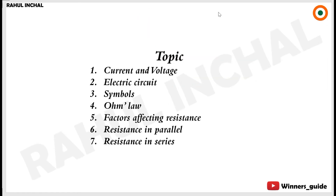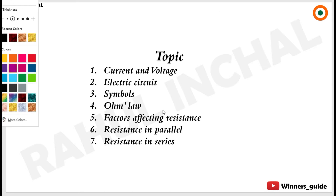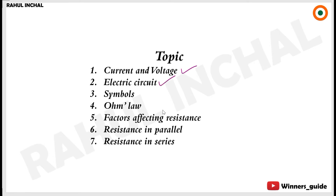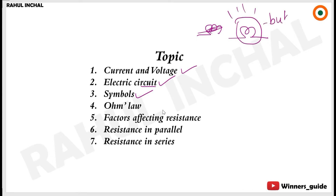What we are going to learn in this class: electric current and voltages, electric circuit — what a circuit is — symbols for different components. For example, this symbol represents a bulb; this is a cell; this is a battery. Then Ohm's law — probably the most important thing today — factors affecting resistance, resistance in parallel, and resistance in series. Don't worry if you don't know anything; I'll give details.